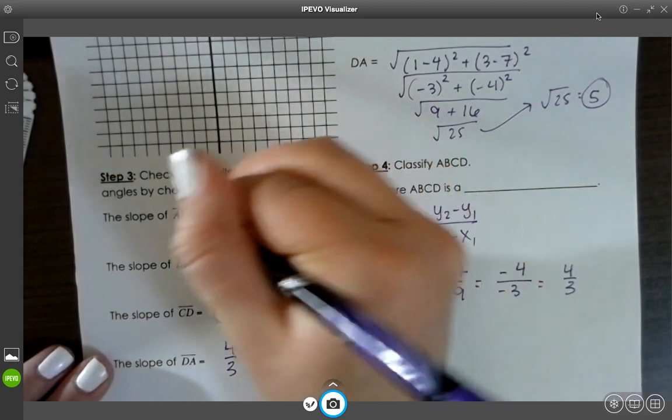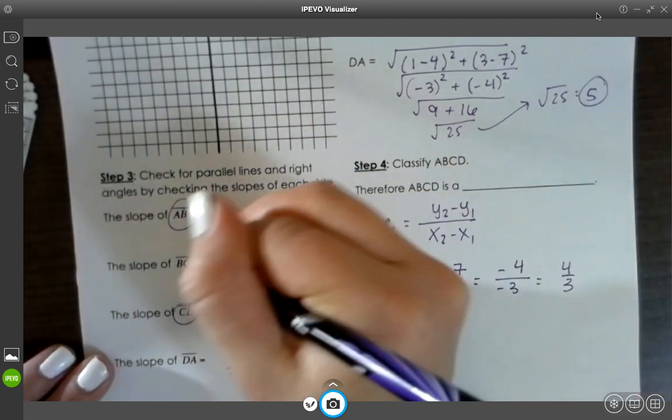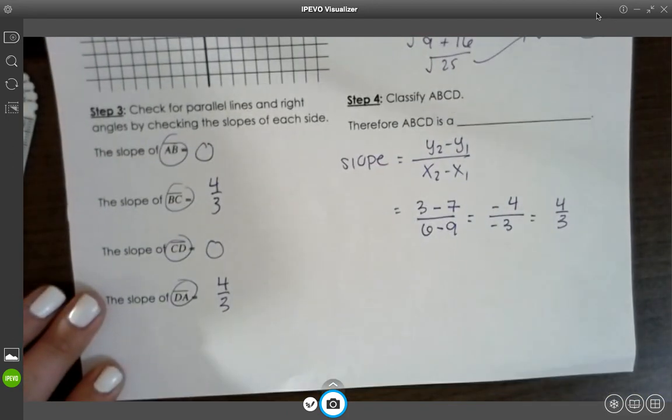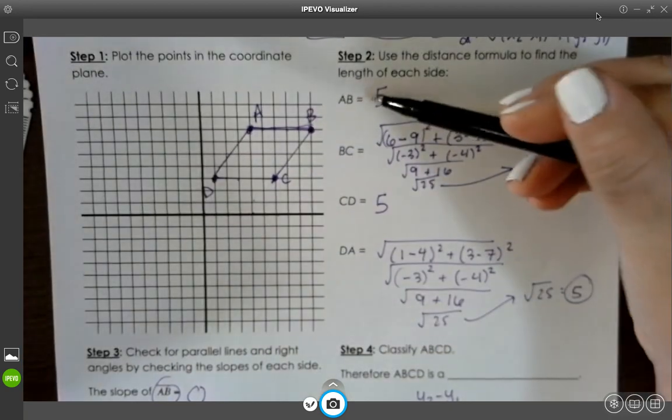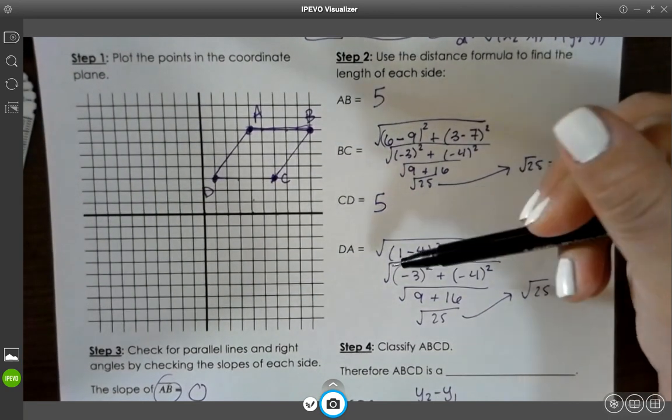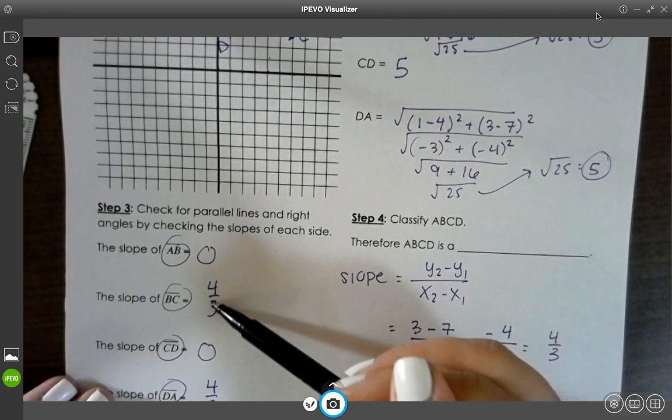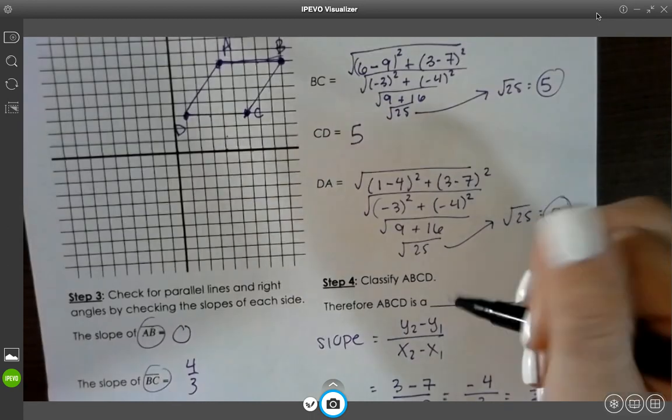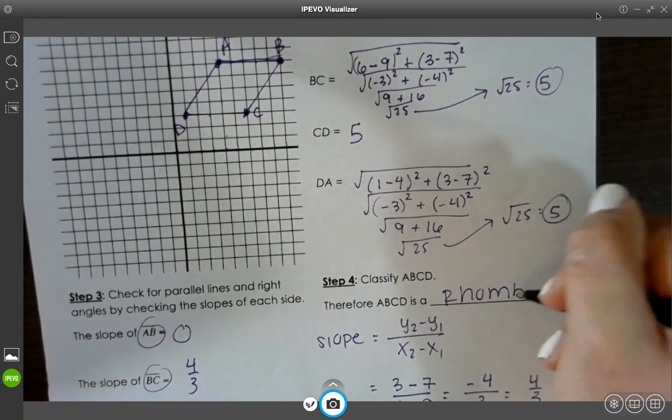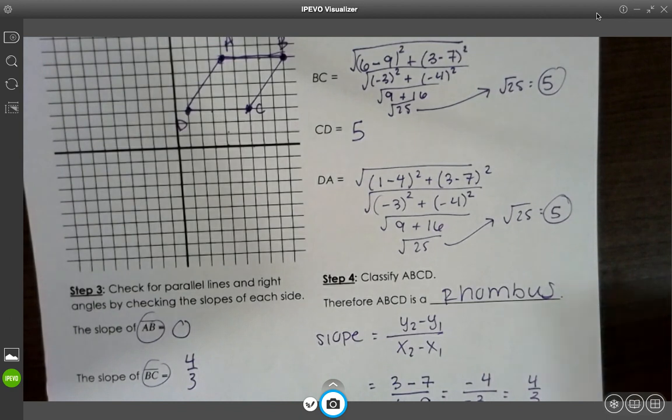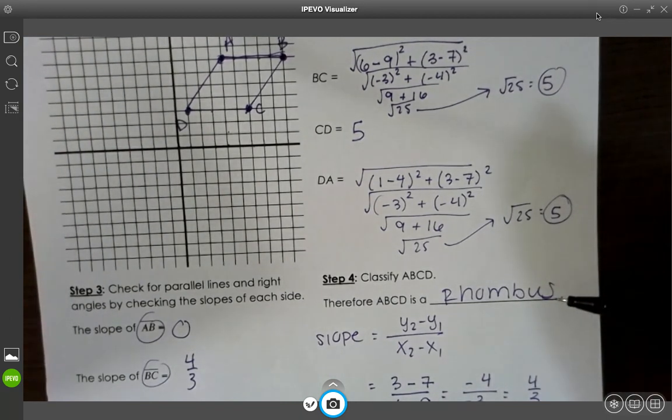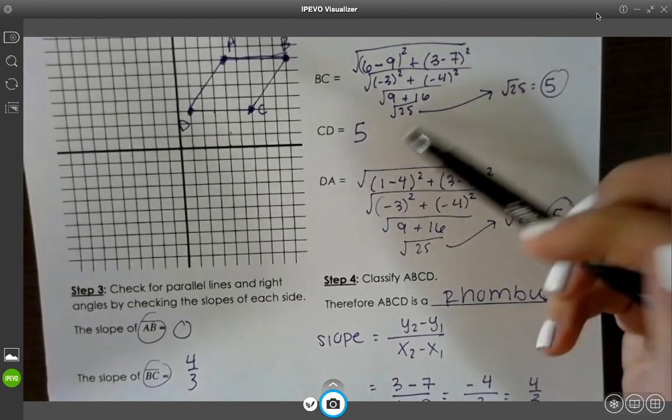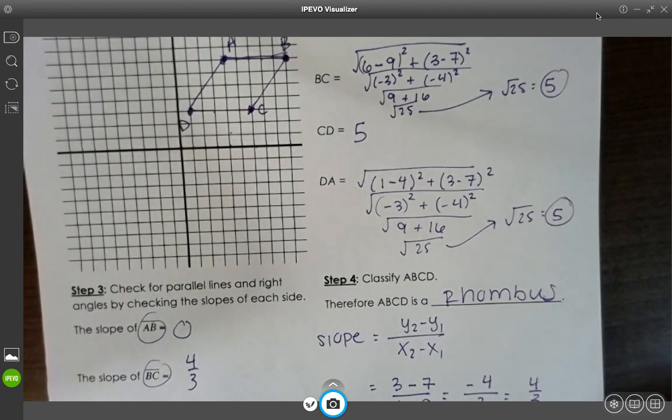But these two are parallel, and these two are parallel. So we have four congruent sides and four parallel sides. That means that this is a rhombus because all of the sides are equal. It's a type of parallelogram, but since all of the sides are equal, it's a rhombus.